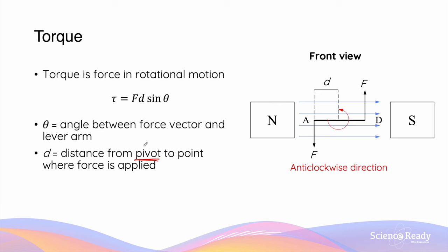The pivot point is the axis about which the coil is rotating. If the coil is rotating about the midpoint between A and D, the distance D is the distance between where the force is applied — at the end of the coil — and the midpoint of AD.